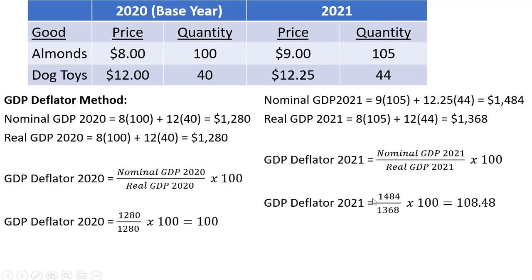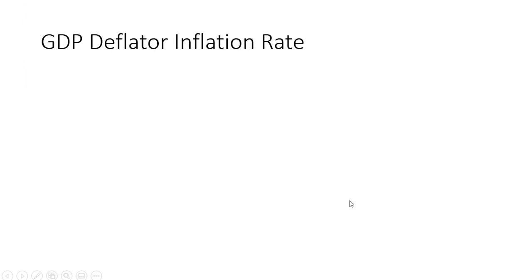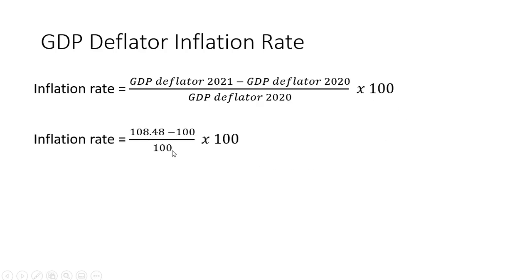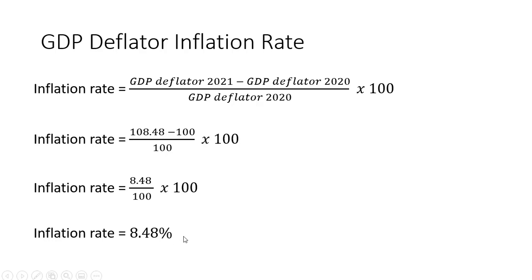Forming our GDP deflator — taking nominal GDP divided by real GDP for 2021, all multiplied by 100 — we get a GDP deflator in 2021 of 108.48. To calculate the inflation rate, we use the percentage change formula: GDP deflator in 2021 minus GDP deflator in 2020, divided by the GDP deflator in 2020, multiplied by 100. Plugging in our values, prices rose on average 8.48% in 2021 using the GDP deflator method.